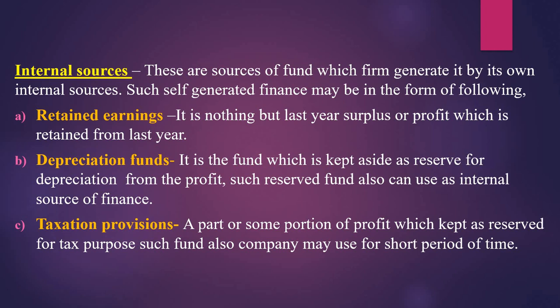Under internal sources, the first one is retained earnings. Retained earnings are nothing but last year's surplus or profit which is retained from the last year. For example, if any amount remains as profit or surplus, that amount will be carried forward to the next year and can be used for the next year. That balance amount of profit is known as retained earnings.